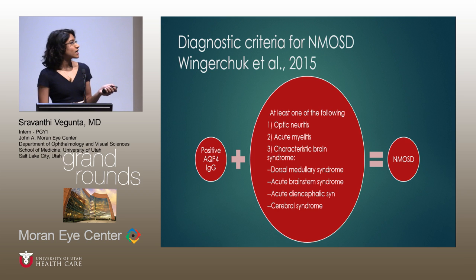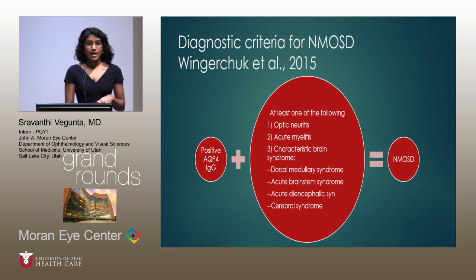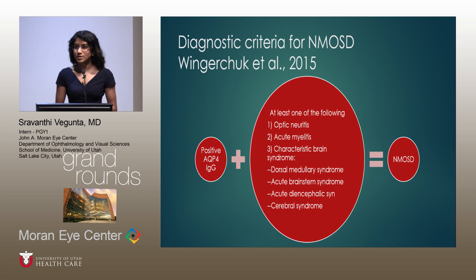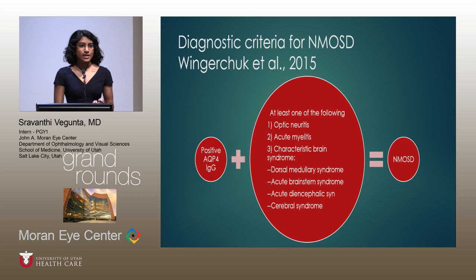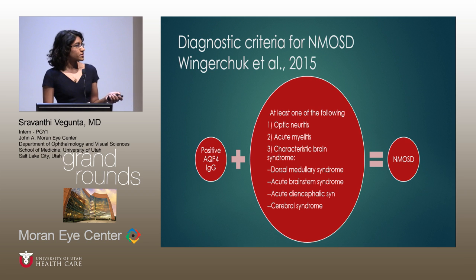For patients with a positive or elevated aquaporin-4 IgG, they should have at least one of the following core clinical criteria to be diagnosed: optic neuritis, acute myelitis, or another characteristic brain stem syndrome. This is the most significant change to the diagnostic criteria — patients don't necessarily have to present with the first two. They could have a dorsal medullary or area postrema syndrome with intractable hiccups, unexplained nausea or vomiting, an acute brain stem syndrome, an acute diencephalic syndrome involving the hypothalamus or thalamus, or even a cerebral syndrome, with the last two requiring supporting MRI findings.